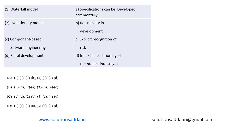First is the Waterfall model. In the Waterfall model, once we have moved to the next stage it is impossible to go back to the previous phase, hence this method is inflexible. So Waterfall maps to 'inflexible partitioning of the project into stages' — this is mapping 1D. This option is now ruled out.